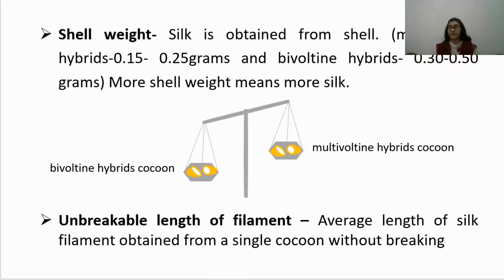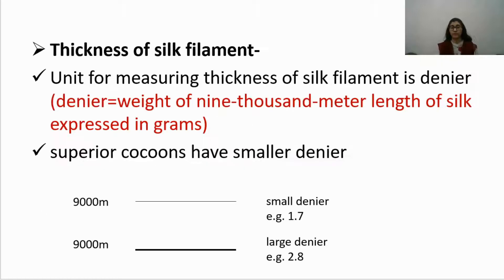The unbreakable length of the filament refers to the average length of silk filament obtained from a single cocoon without breaking, and this should be as long as possible. Thickness of the silk filament is measured in denier, which is the weight of 9,000 meters of silk expressed in grams. Superior cocoons have a smaller denier value, meaning a thinner filament, which is preferred because it can be easily blended with other fabrics such as cotton and polyester.